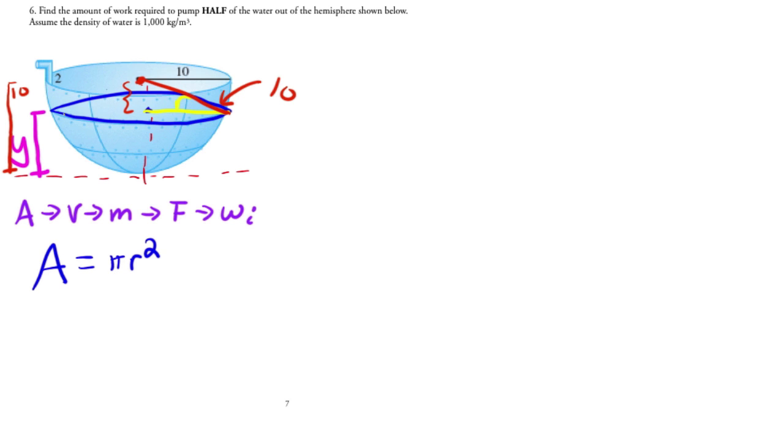So that means that this guy right here, that's equal to 10 minus y. So then what that means is that r is equal to the square root of 100 minus (10 minus y) squared.